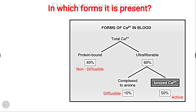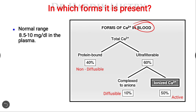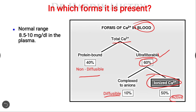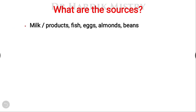In which form is calcium present inside our body? Looking at the forms of calcium in the blood: out of total calcium, around 40% is protein-bound, which is non-diffusible, and 60% is ultrafiltrable. Of this 60%, 10% is complexed to anions and forms the diffusible pool, and around 50% is ionized calcium, which is the active form. The normal range is 8.5 to 10 mg per dL in plasma.